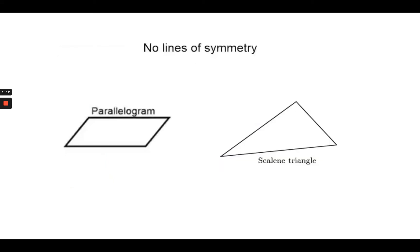There are also shapes that don't have any lines of symmetry. A parallelogram is an example of one that would not have it. No matter how I fold that shape, the two sides would not meet up. A scalene triangle is another example of a shape that does not have lines of symmetry.